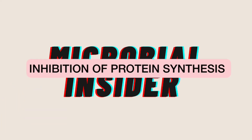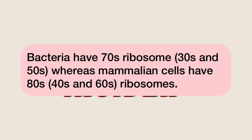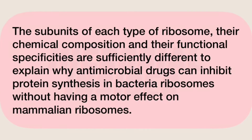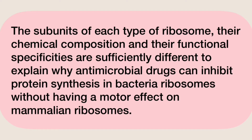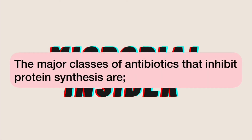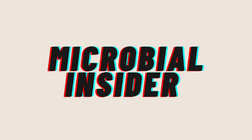Inhibition of protein synthesis. Bacterial cells have the 70S ribosomes, which are composed of the 30S and 50S ribosomal subunits, whereas mammalian cells have the 80S ribosomes, which consist of the 40S and 60S ribosomal subunits. The subunits of each type of ribosome, their chemical composition, and their functional specificities are sufficiently different to explain why antimicrobial drugs can inhibit protein synthesis in bacterial ribosomes without having a major effect on mammalian ribosomes.